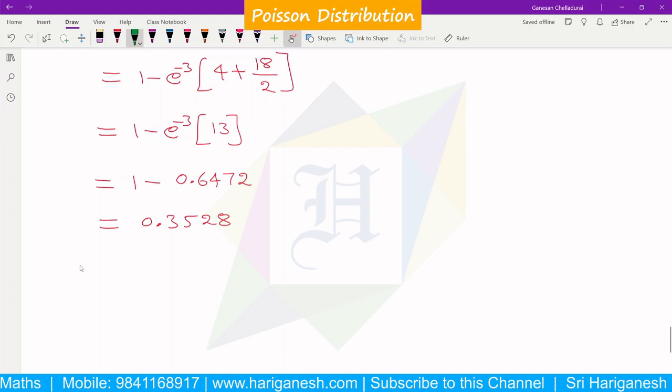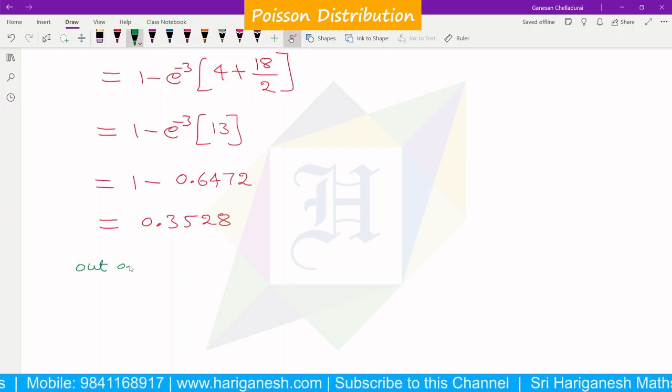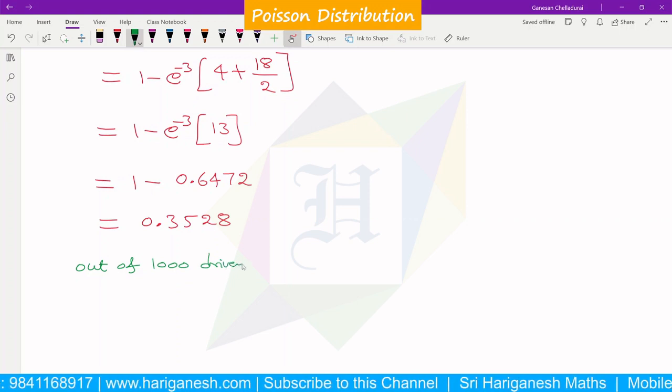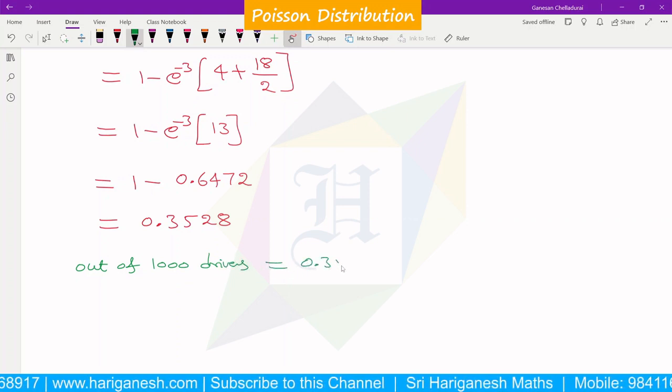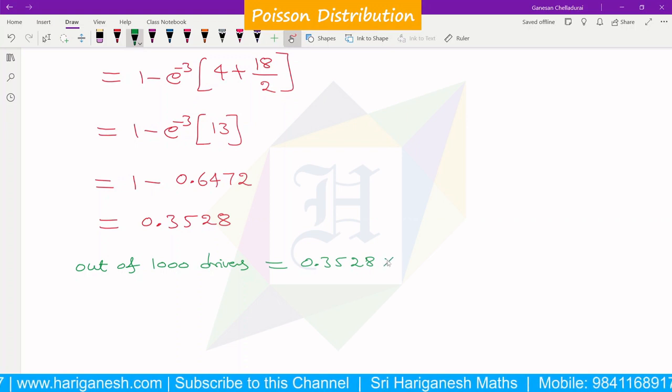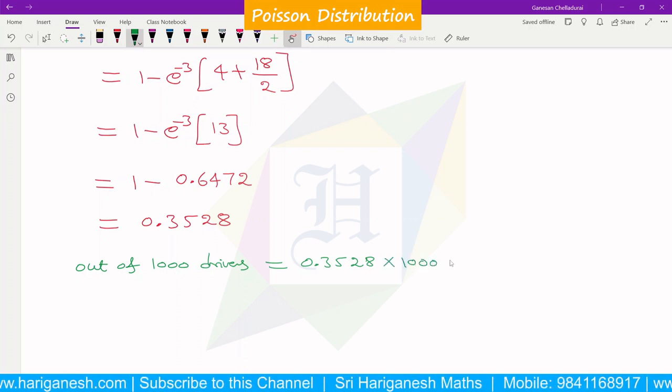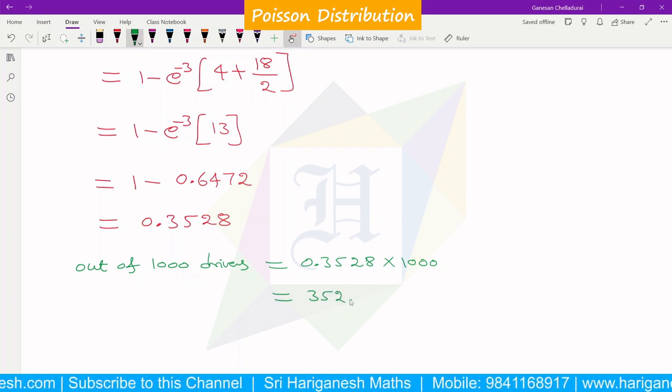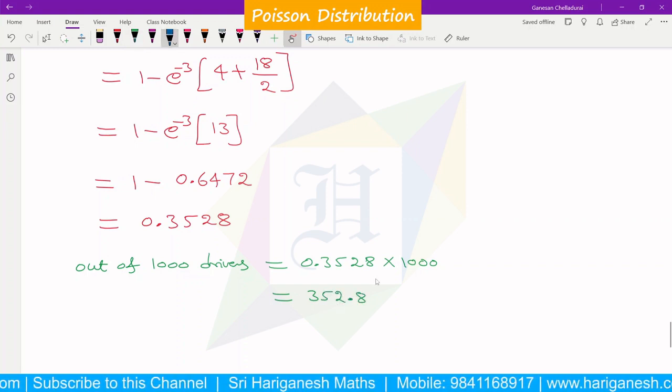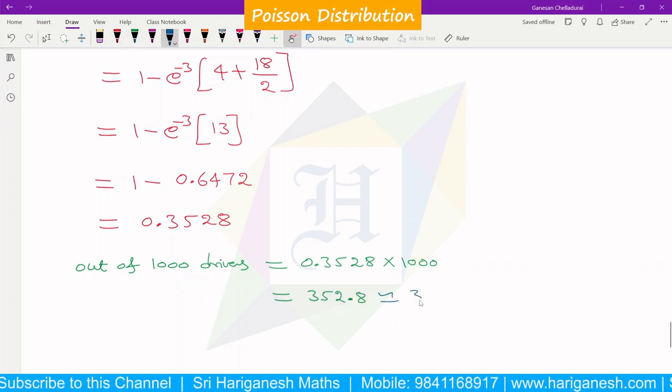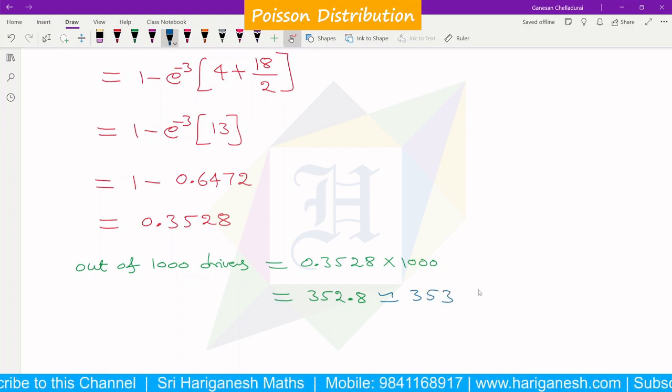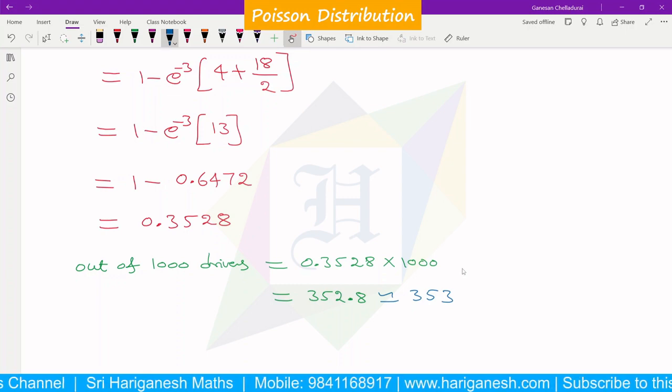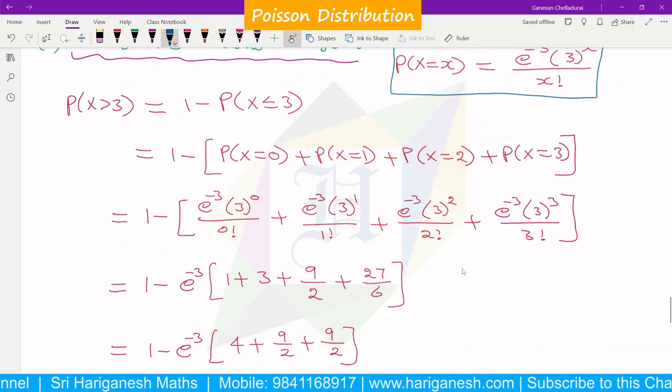So this is the probability value. Out of 1000 drivers, out of 1000 drivers, 0.3528 × 1000 equals 352.8. So approximately 353 drivers. So out of 1000 drivers, 353 drivers have more than 3 accidents.